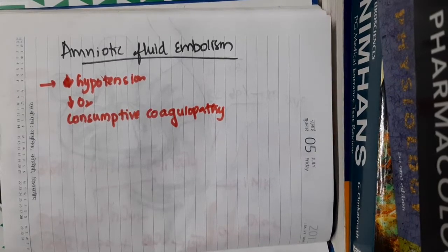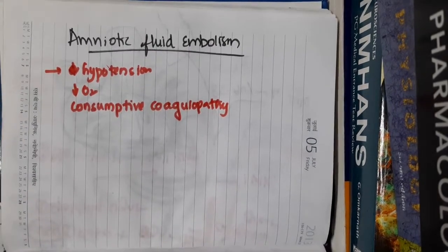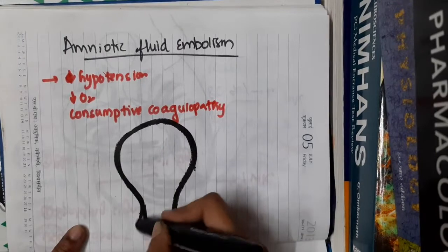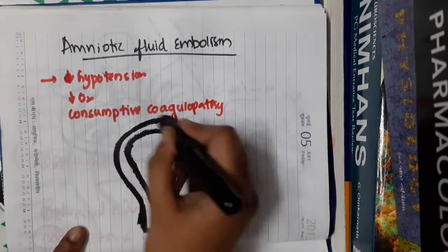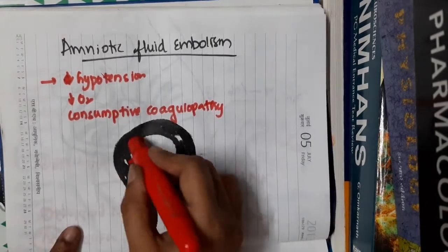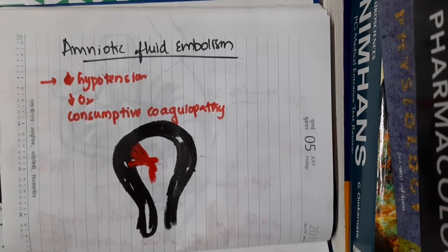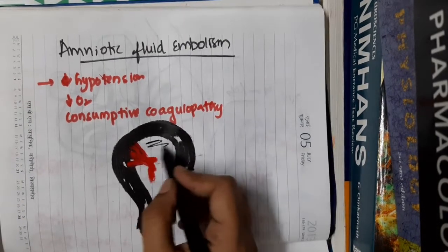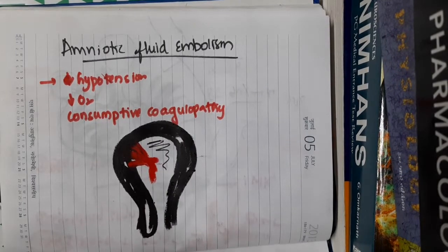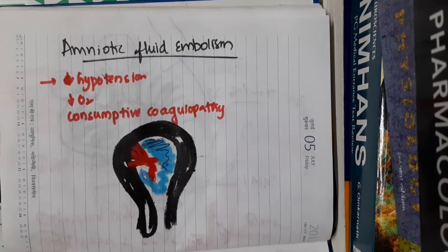In amniotic fluid embolism, I will show you with an illustration. This is the uterus during delivery, and this is the placenta. During delivery, abortion, intrauterine fetal death, some of the amniotic fluid present here may enter the maternal circulation. Just some drops — not even the full amniotic fluid — enter the maternal circulation and cause amniotic fluid embolism.